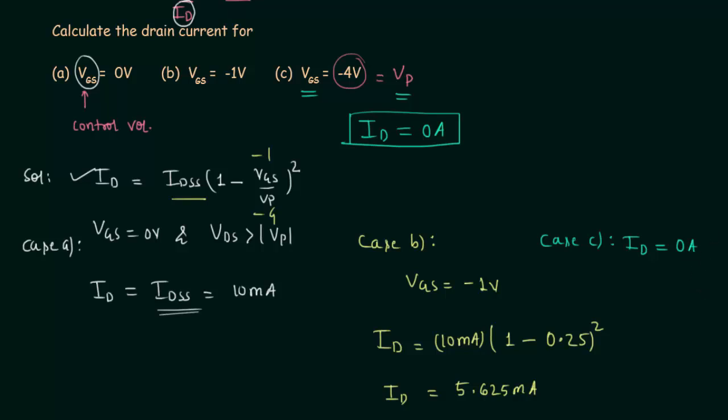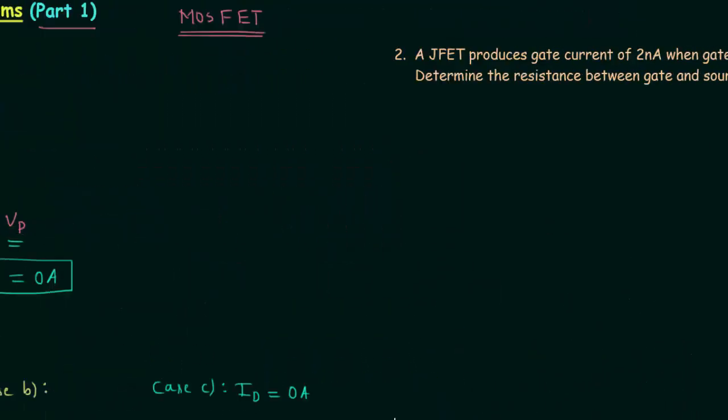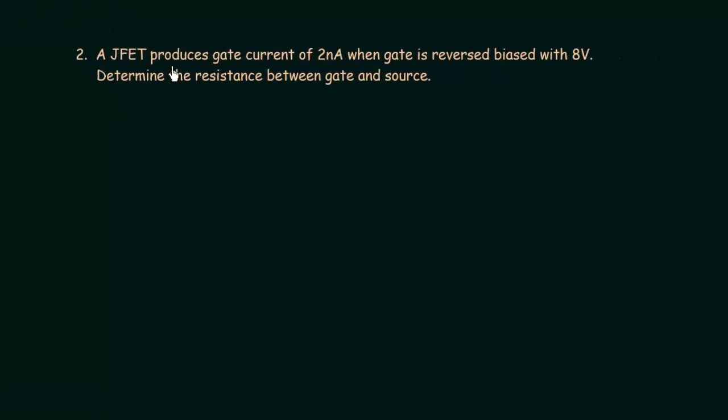Now we will move to problem number 2. In the second problem, we have to calculate the resistance. A JFET produces gate current of 2 nanoamps, which means IG is equal to 2 nanoamps. Ideally, the gate current IG is equal to 0 amps, but in this case it is equal to 2 nanoamps. When gate is reverse biased with 8 volts, so VGS is equal to 8 volts, and we have to determine the resistance between gate and source.